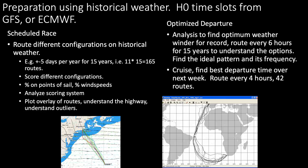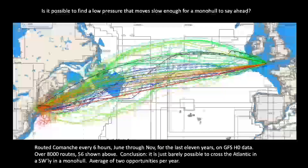For optimizing departure time — useful for record attempts or deliveries — I'll run a route every six hours for 15 years to understand the options. For a cruise, run a route every four hours over the next week to find the best departure time. For example, leaving Panama heading north to Cuba, there's often a particularly good window, and it's often worth waiting two or three days once you know when it is.